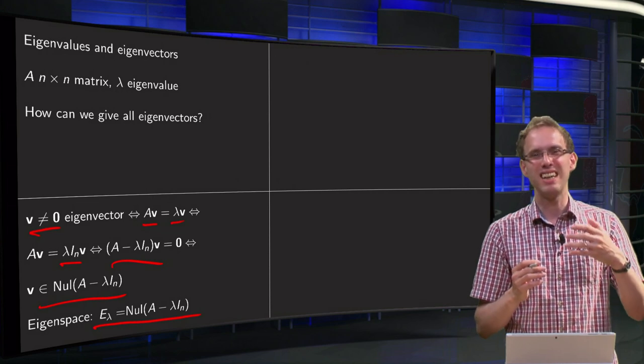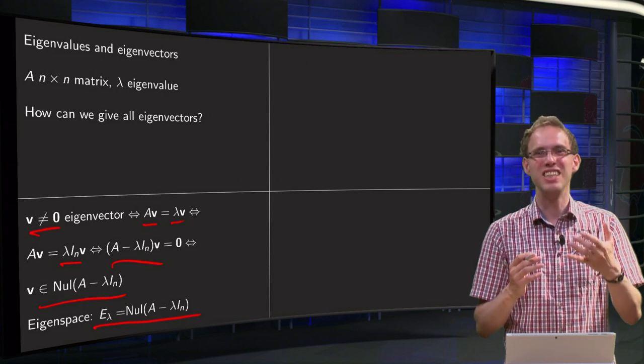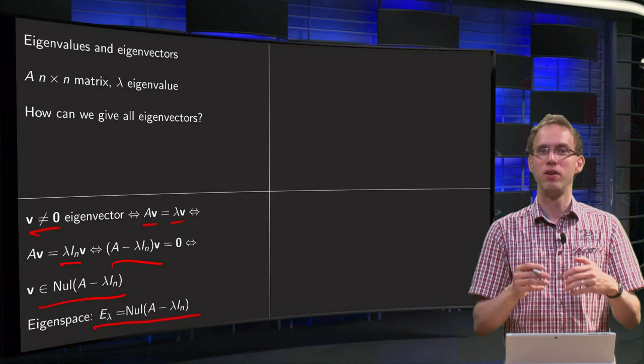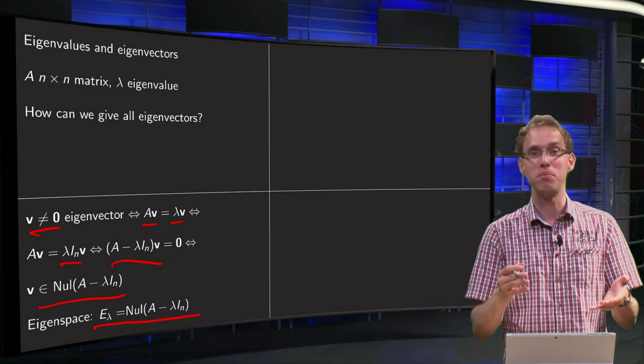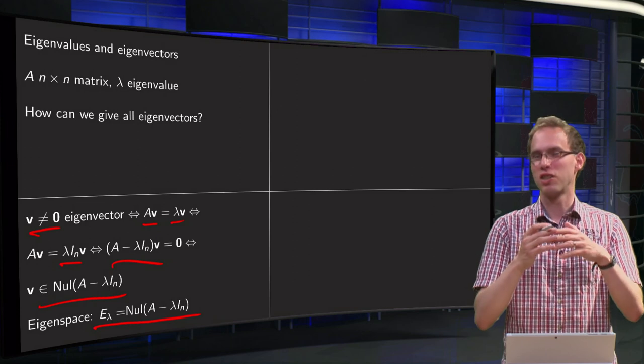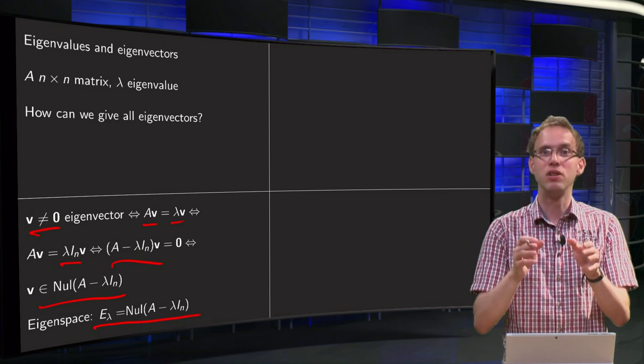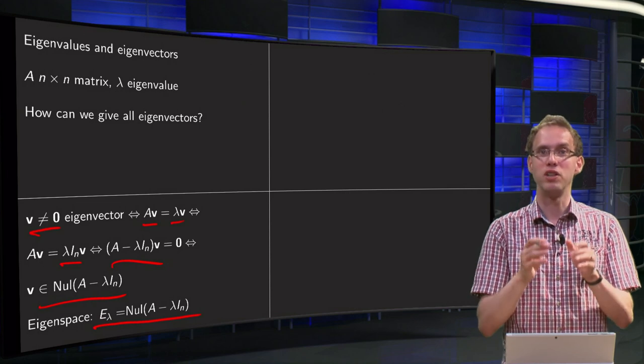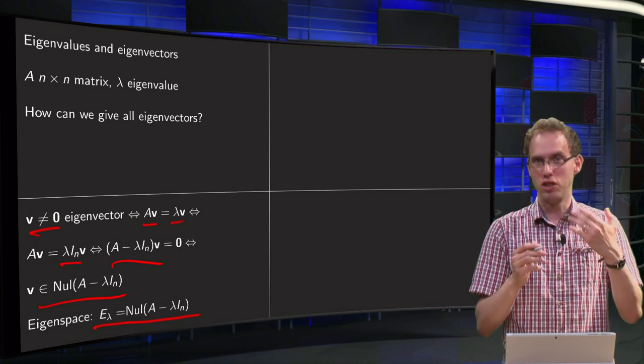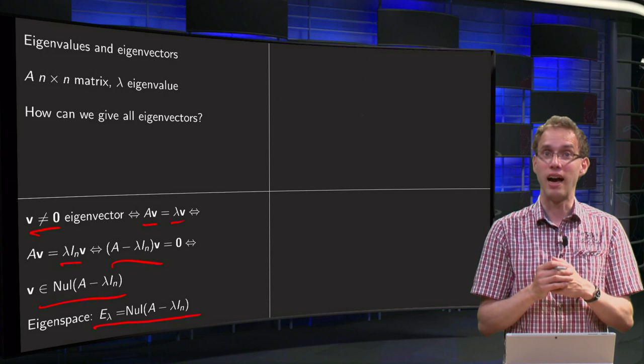Actually we didn't really need this new notion of eigenspace. We could have said the null space of A minus lambda times the identity matrix all the time. But that is kind of long, so we like to give that notion of this null space a new name, and this new name is the eigenspace.